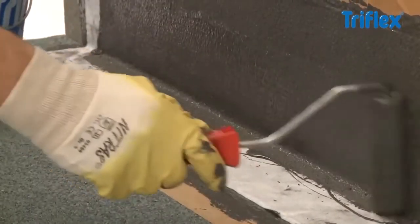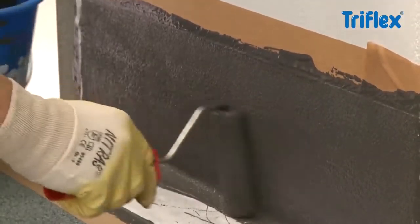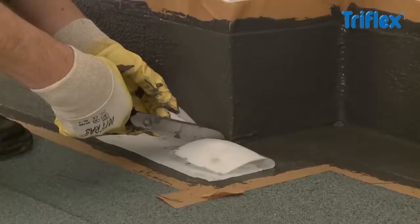Finally, apply another layer of Triflex Pro Detail to cover the whole area. At least 1 kg resin per square meter is needed for the second coat.